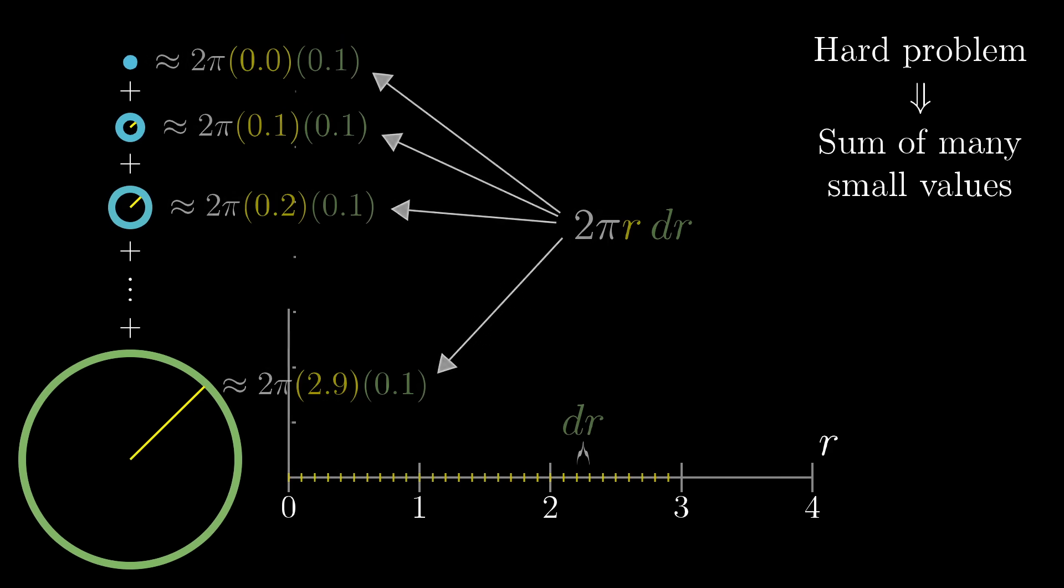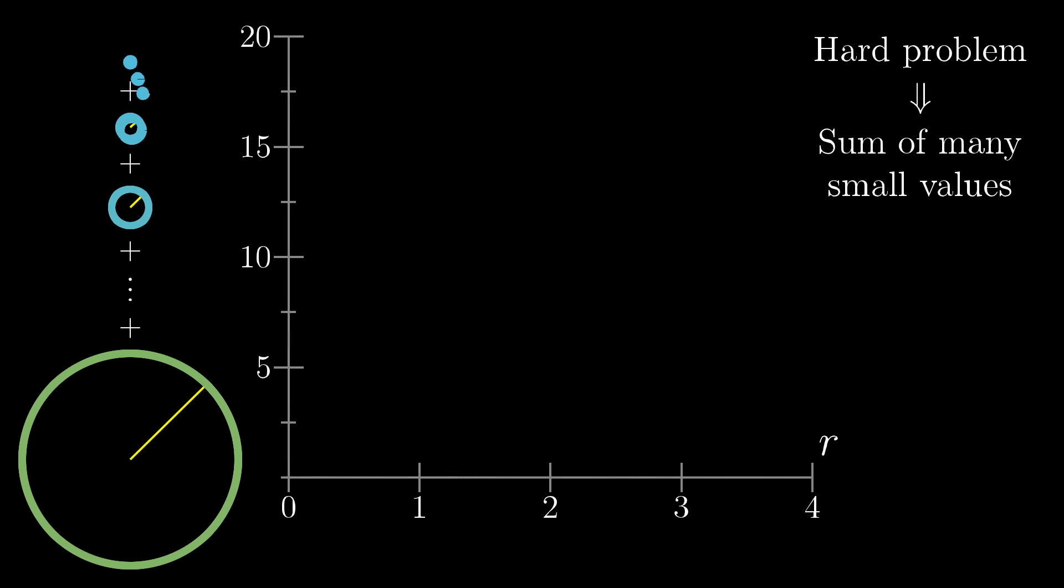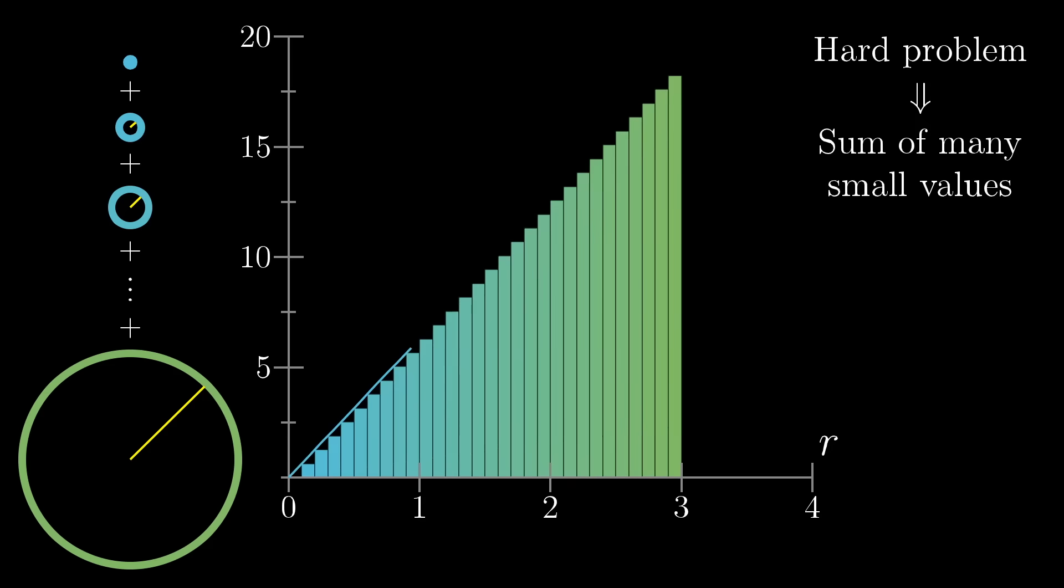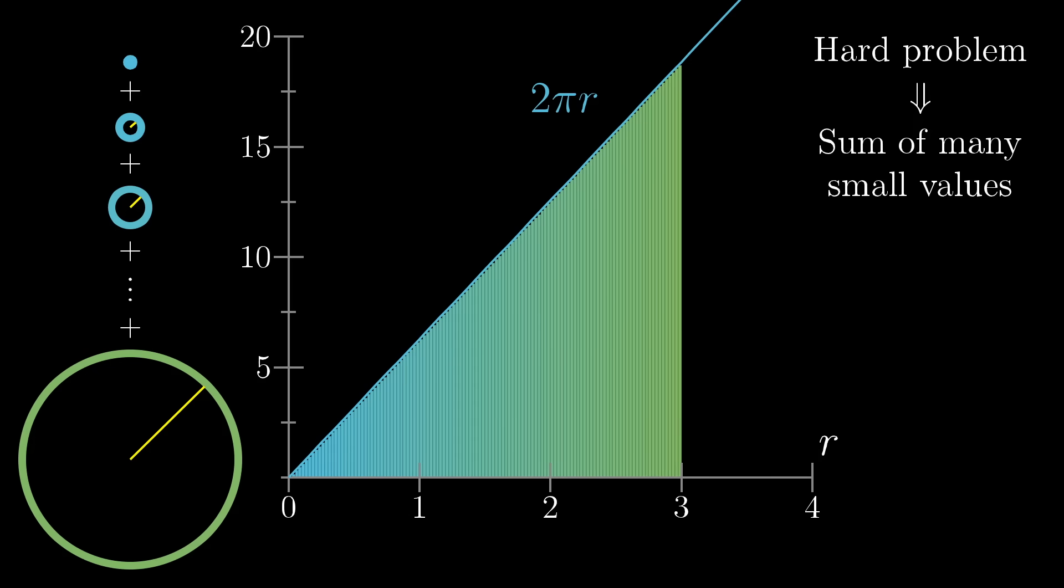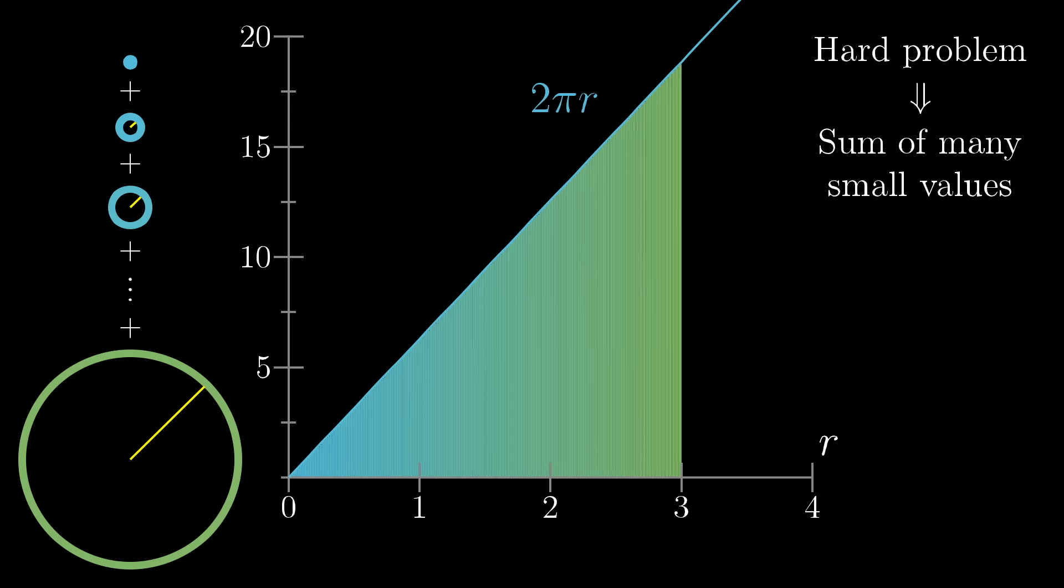Adding all of those numbers could be seen in a different, pretty clever way as adding the areas of many thin rectangles sitting underneath a graph, the graph of the function 2 pi r in this case. Then, and this is key, by considering smaller and smaller choices for dr, corresponding to better and better approximations of the original problem, the sum, thought of as the aggregate area of those rectangles, approaches the area under the graph. And because of that, you can conclude that the answer to the original question, in full unapproximated precision, is exactly the same as the area underneath this graph.